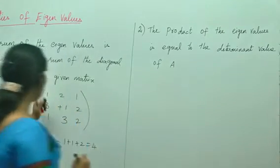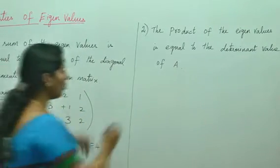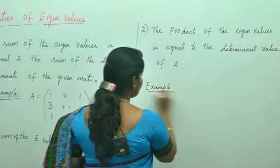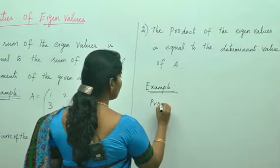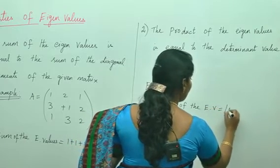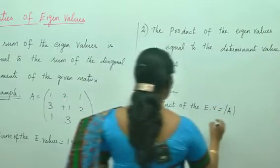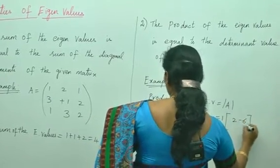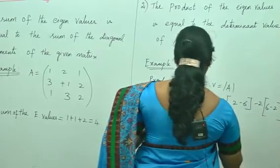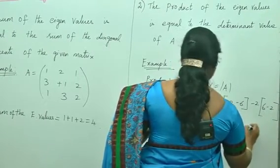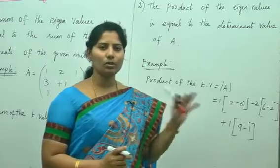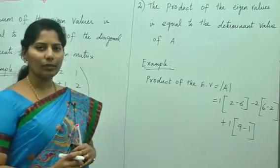Taking the same example, how will you find out the product? The product of the eigenvalues equals the determinant of A, which equals 1 into (2 minus 6), minus 2 into (6 minus 2), plus 1 into (9 minus 1). When you simplify all these, you will get some value. This is the product of the eigenvalues.